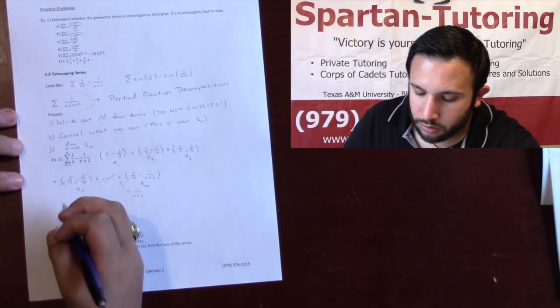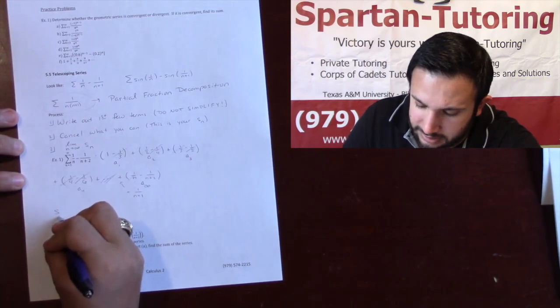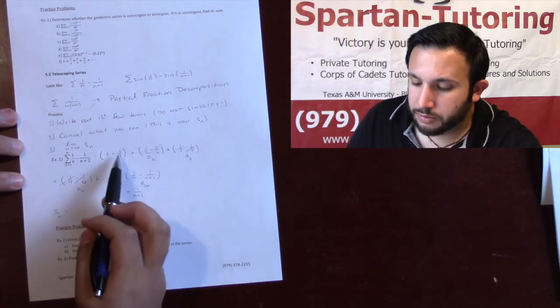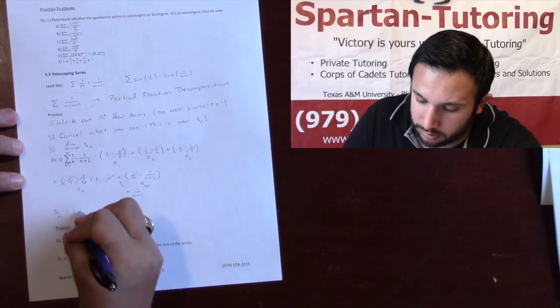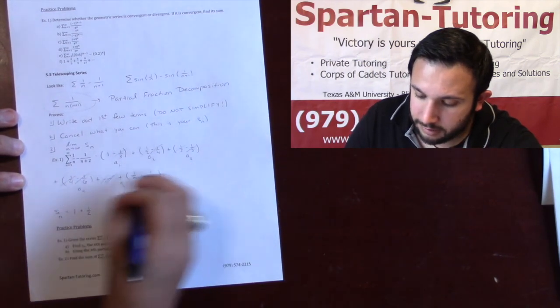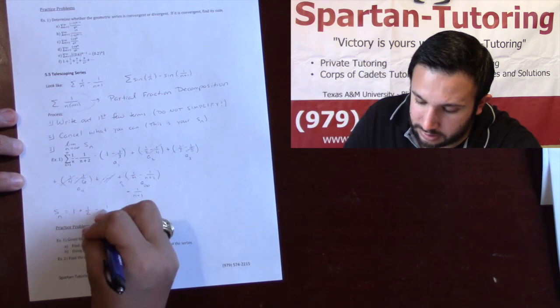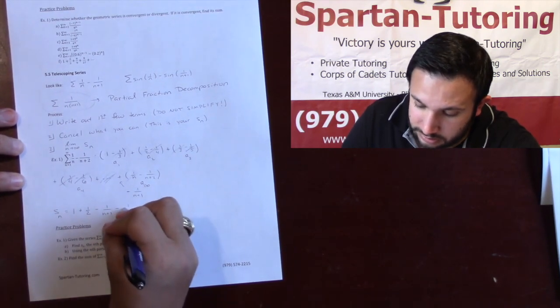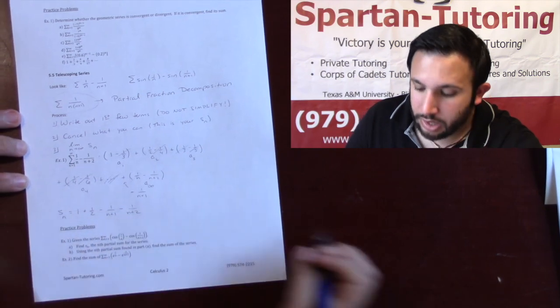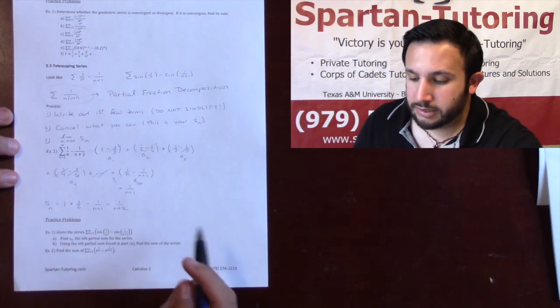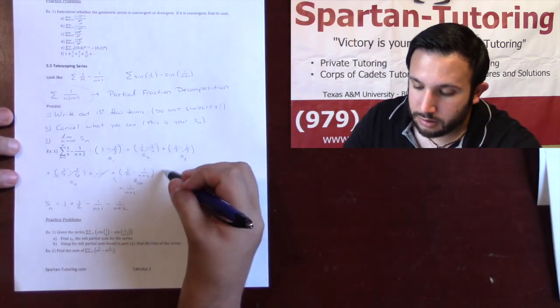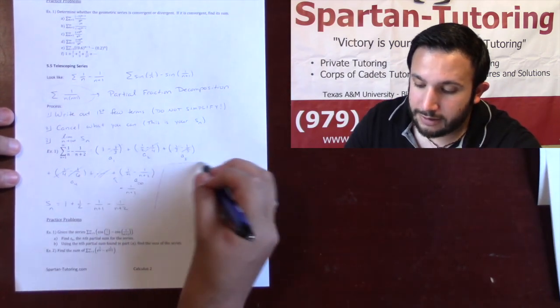And so what I have left over, my S_n is just going to be, I'm going to have 1 plus 1/2. Then I've got this minus 1 over n plus 1 minus 1 over n plus 2. And what this is, this would be the partial sum of my telescoping series.